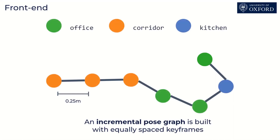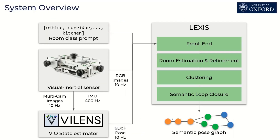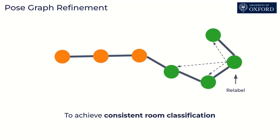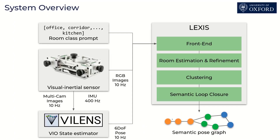This procedure is executed for the full graph. The initial segmentation can be susceptible to incorrect classifications, therefore we employ a refinement process. The refinement process is based on the label propagation algorithm and ensures consistent room classification and segmentation. We can then differentiate the segmentation into clusters representing individual rooms.